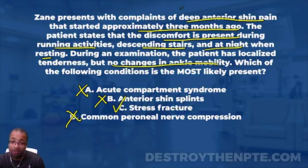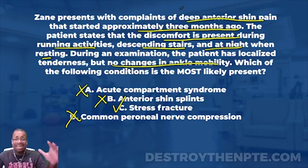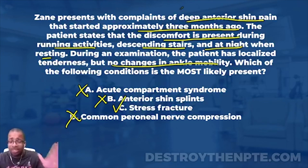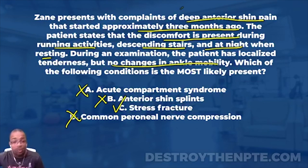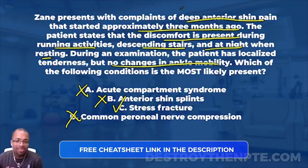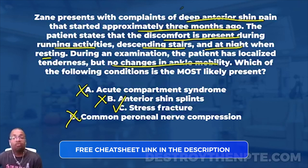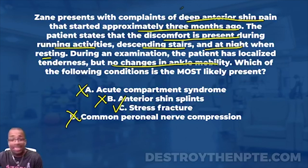Congratulations to those of you who got this one correct. If you pulled over on the side of the road or stopped your treadmill to listen, I completely understand. I never want to leave you with just a basic explanation - I always want to take you to the next level. I have a cheat sheet to help you with differentially diagnosing these conditions: anterior compartment syndrome, shin splints, stress fractures. If you're on the podcast, go into your show notes and click the link - it's one of my fire cheat sheets. Go get it.